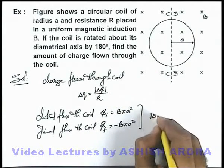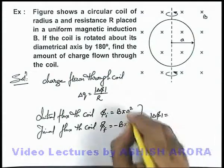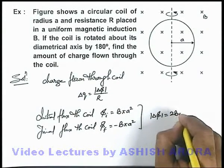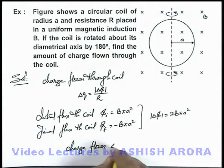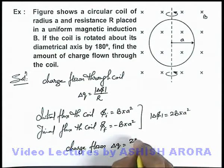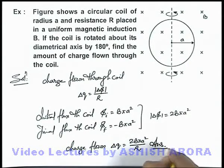From this, the magnitude of change in flux is 2Bπa². Therefore, the charge flown through the coil can be given as Δq = 2Bπa²/R. That is the answer to this problem.